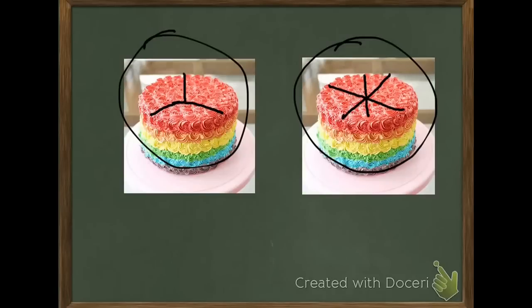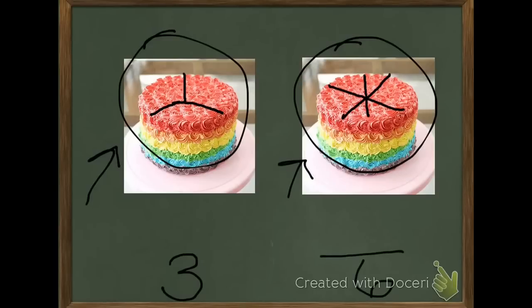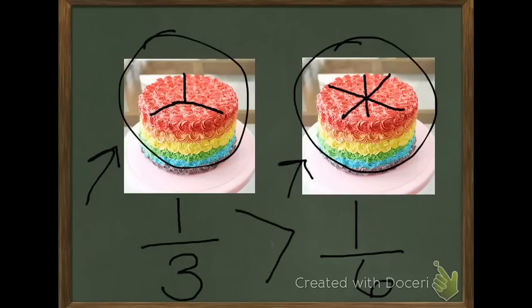So let's turn this into a fraction. This cake right here, I only have 3 total pieces. This cake right here, I have 6 total pieces. If I were to eat just one piece, I would have 1 third of this cake, and I would have 1 sixth of this cake. The numerators are the same, and I want to know which piece is bigger. Whenever the numerators are the same, you look at the denominators. The denominator that is the smallest is going to be the bigger fraction. So 1 third is greater than 1 sixth.